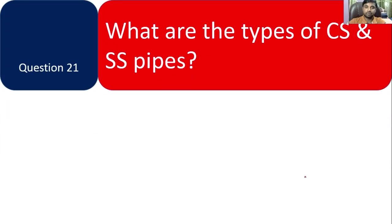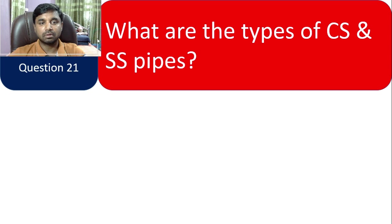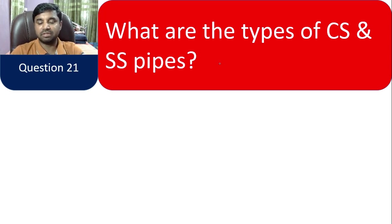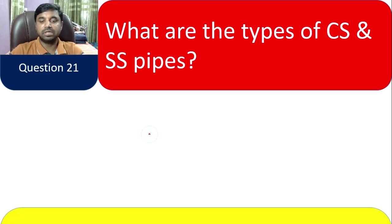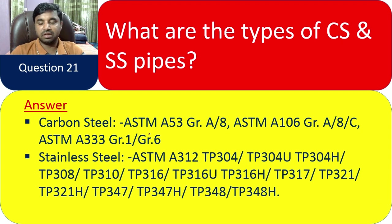Question 21: What are the types of CS and SS pipe? Carbon steel includes ASTM A53 Grade A/B, ASTM A106 Grade A/B/C, and ASTM A333 Grade 1 and Grade 6. Stainless steel includes grades such as ASTM A312 TP304 and TP304L, along with many other grades.